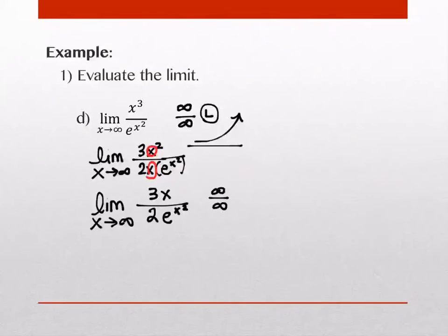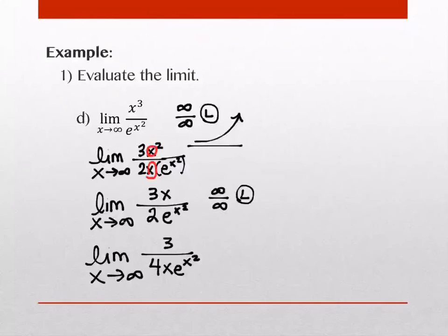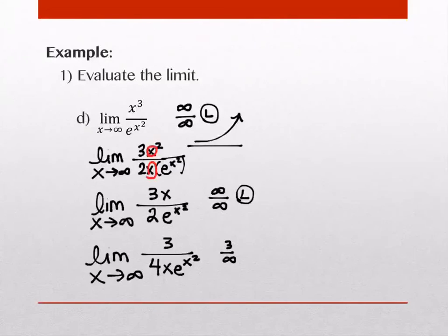Since we still have infinity over infinity, L'Hopital's rule applies again — you can use a second step within the same problem. Taking the derivative of 3x gives 3. The derivative of 2e to the x squared is 4x·e to the x squared. Now the numerator is the constant 3, not infinite, while the denominator is still going to infinity. You can't apply L'Hopital's rule again because the numerator is no longer infinite. When you divide a constant by something getting infinitely large, it goes to zero. So the limit is 0.